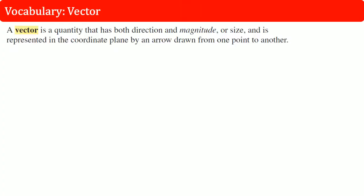What is a vector? A vector is a quantity that has both direction and magnitude. The magnitude refers to the size and is represented in the coordinate plane by an arrow drawn from one point to another.